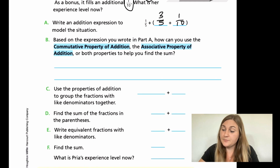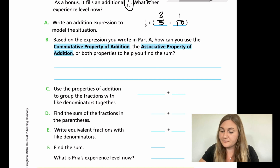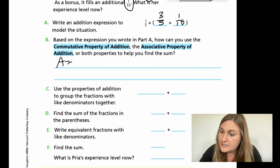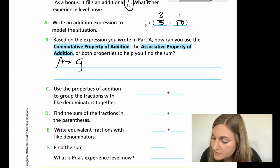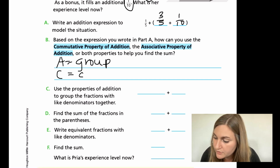In B, it says based on the expression you wrote in part A, how can you use the commutative property of addition and associative property of addition, or both properties, to help you find the sum? The associative property means you can group like fractions together, so I'll note: group. And for the commutative property, you can rearrange or change the order.